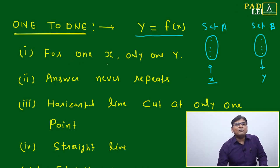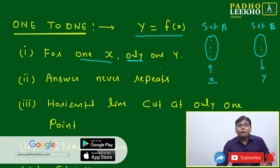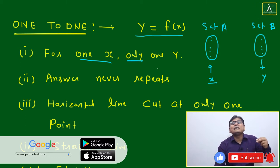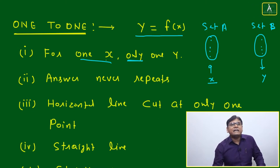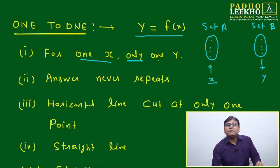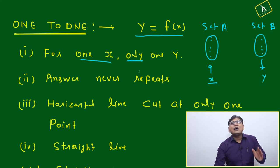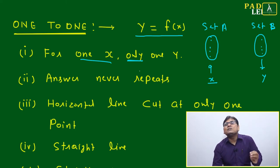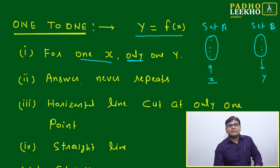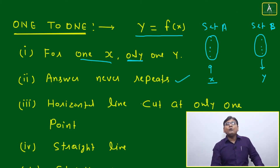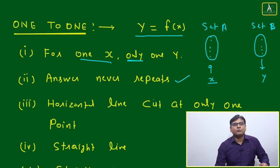For one-to-one function, one X will give only one Y. This is one of the conditions. For a general function it is not necessary that one X gives one Y, but for one-to-one function, one input strictly gives only one output. One value of the independent variable will always give one certain distinguished output or dependent variable. Also, the answer will never repeat — for one-to-one function, if you put any input, the answer will always be different for the next input.